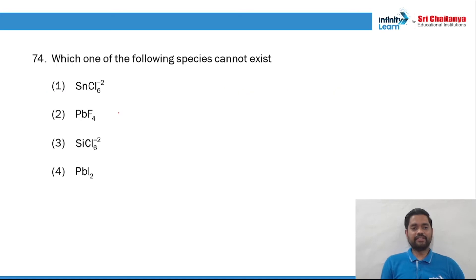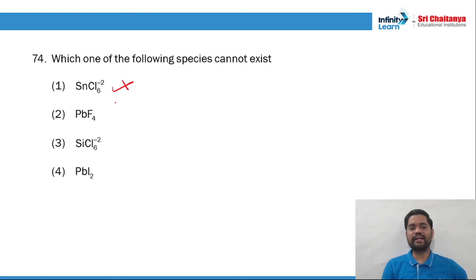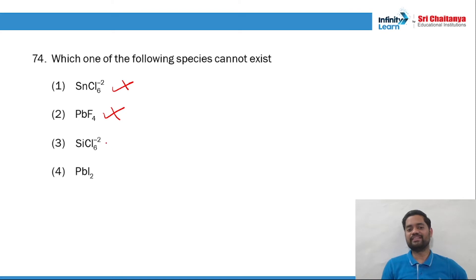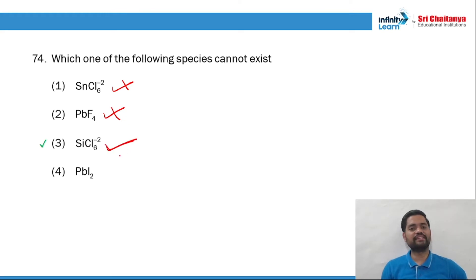Question 74: which one of the species cannot exist? SnCl6²⁻ exists, not the right answer. Lead tetrafluoride exists, not the right answer. SiCl6²⁻ — chlorines are very large atoms, and a single silicon cannot accommodate 6 of them. Hence this should be the right answer. So question 74, option number 3 is the right answer.